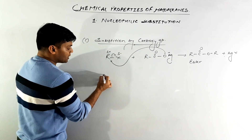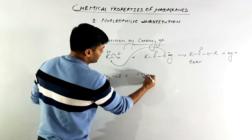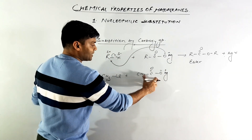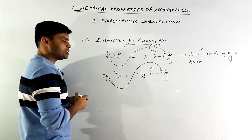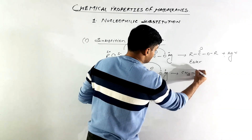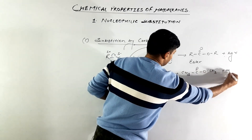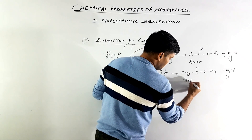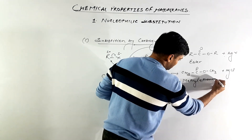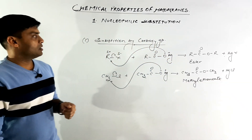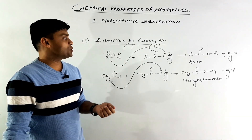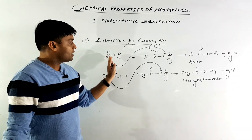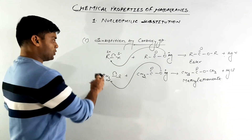For example, if we react CH₃Cl with CH₃COOAg (where oxygen carries a negative charge and silver a positive charge), the acetate ion, being a stronger nucleophile, attacks the methyl group through its negative charge and substitutes the halide ion. This results in the formation of CH₃COOCH₃ (methyl ethanoate) plus AgCl. In all nucleophilic substitution reactions, the nucleophilic part of the reagent — the negative part — attacks the polar alkyl group and substitutes the halide ion.